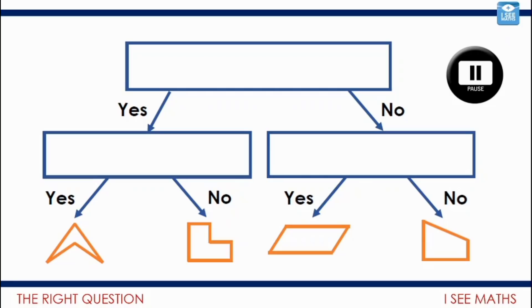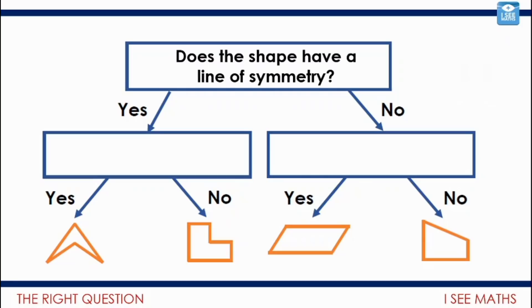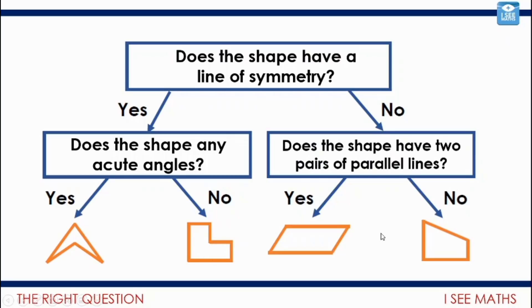Well, are you ready to have a little look? The top box: Does the shape have a line of symmetry? Well, yes for the two shapes on the left—we've got one here and one just there—and it's no for the shapes on the right, so that's what sorts them into this side. Another question on the left: Does the shape have any acute angles? Well yes, this arrowhead has got these two acute angles here, but we don't have one for this shape here. And does the shape have two pairs of parallel lines? Well of course the parallelogram does, and the trapezium, it doesn't.